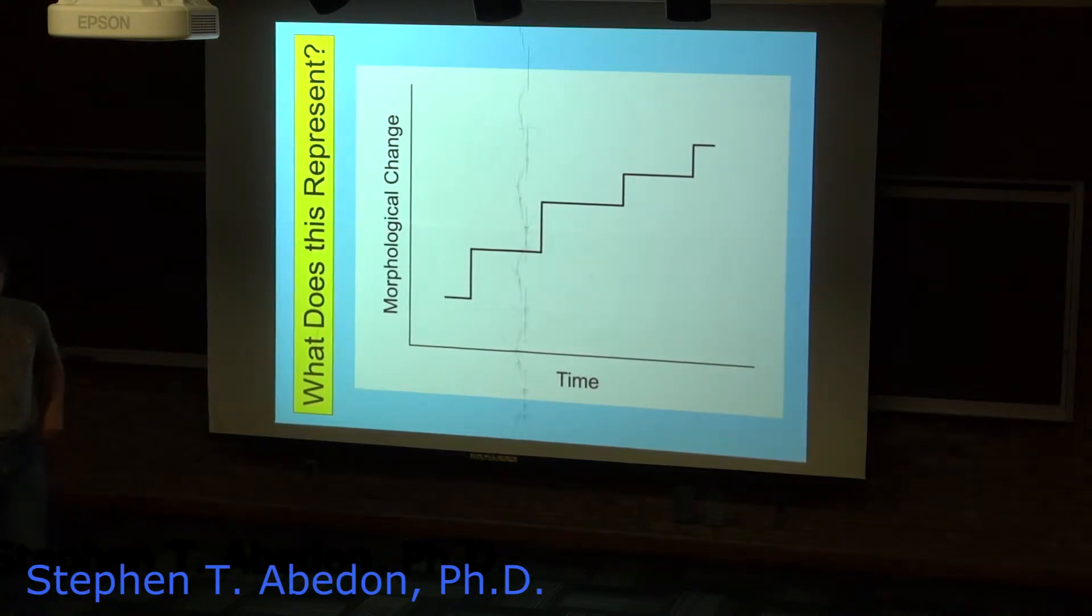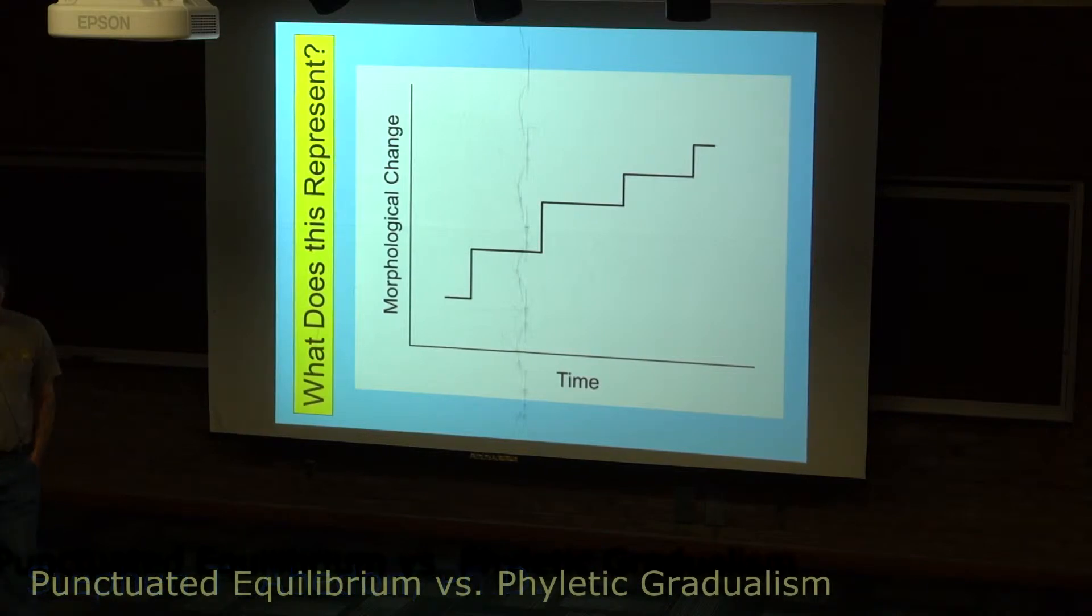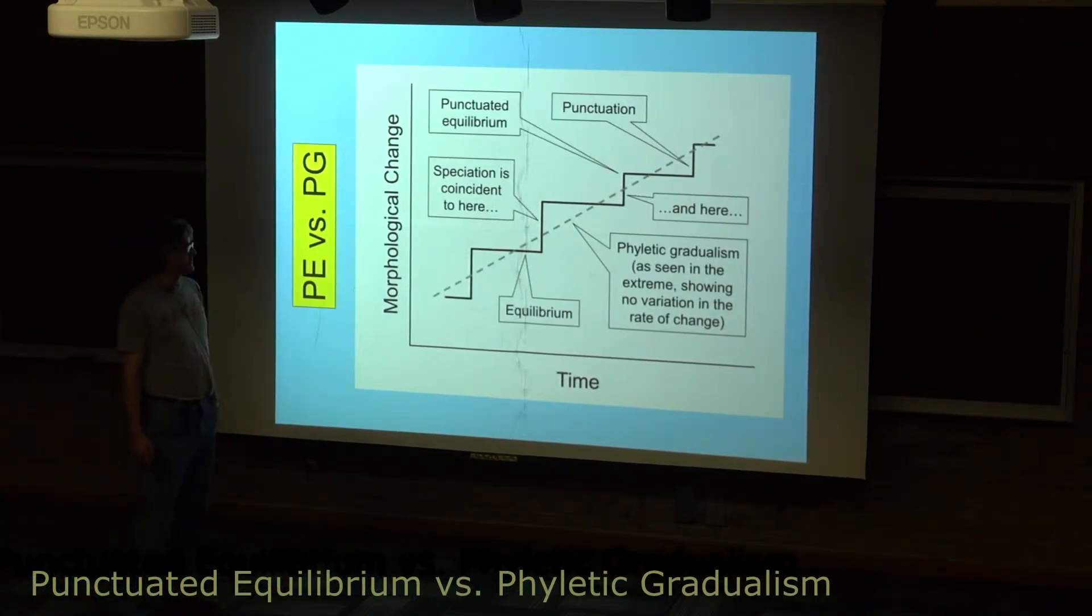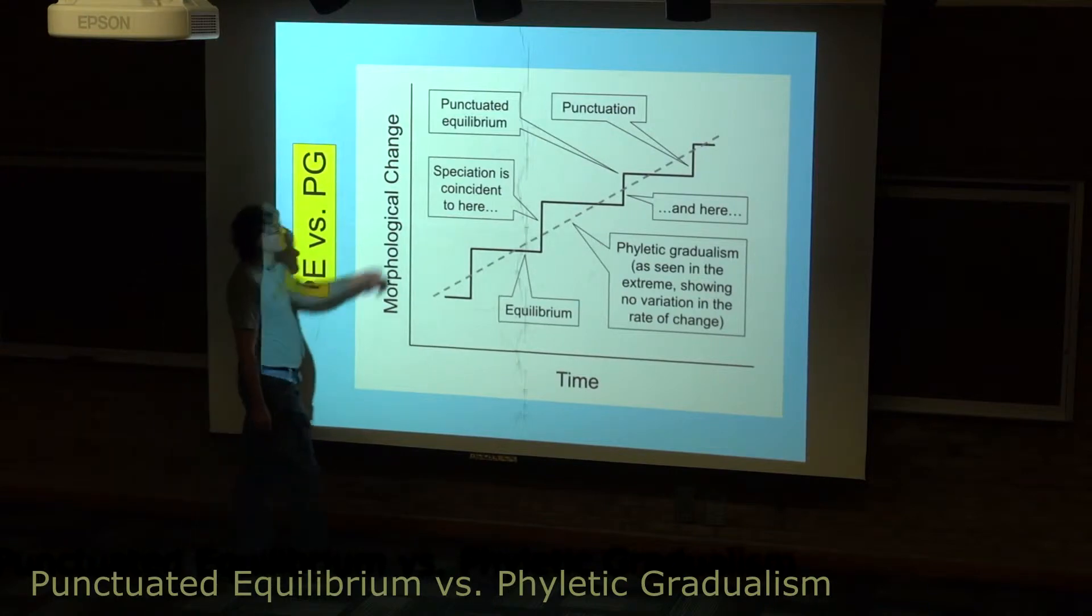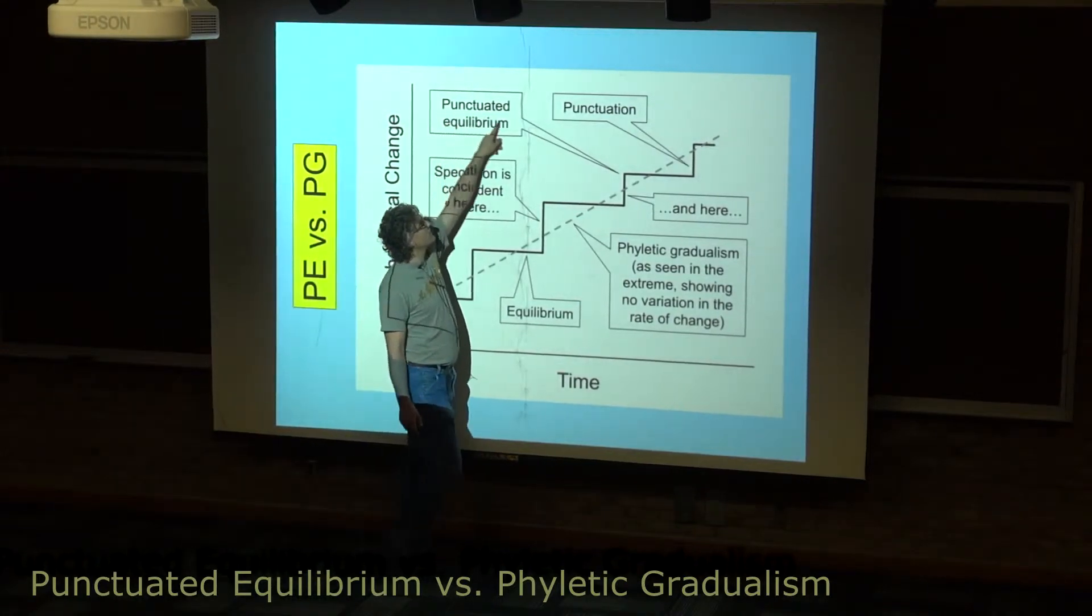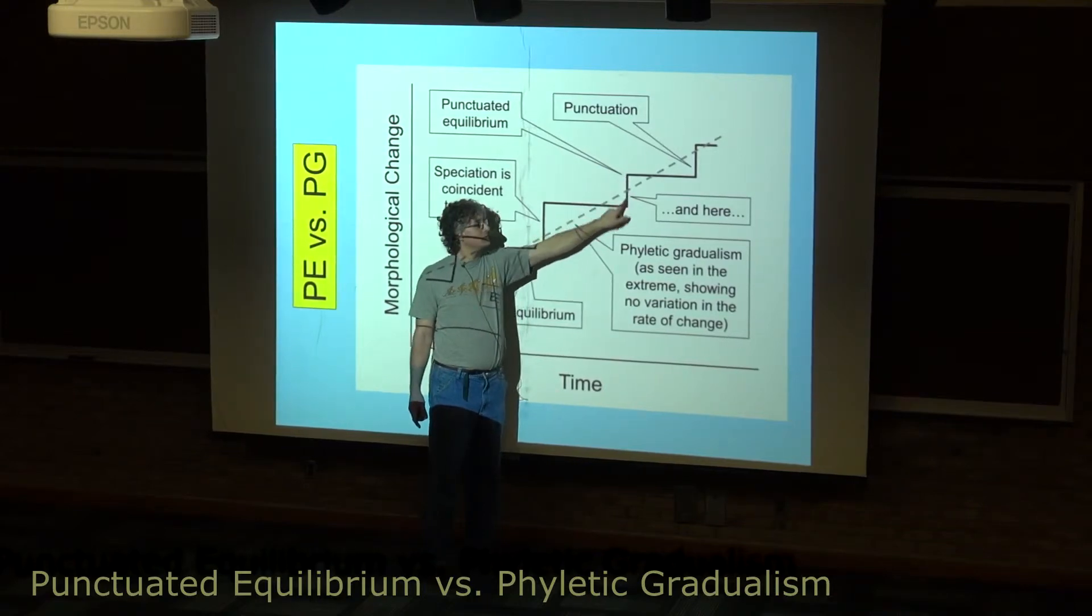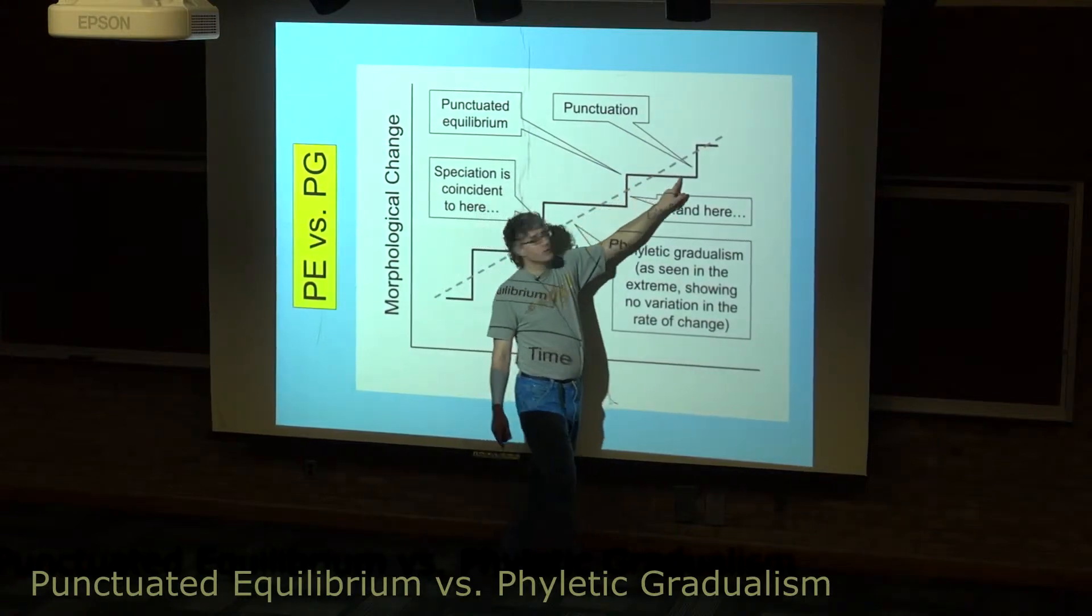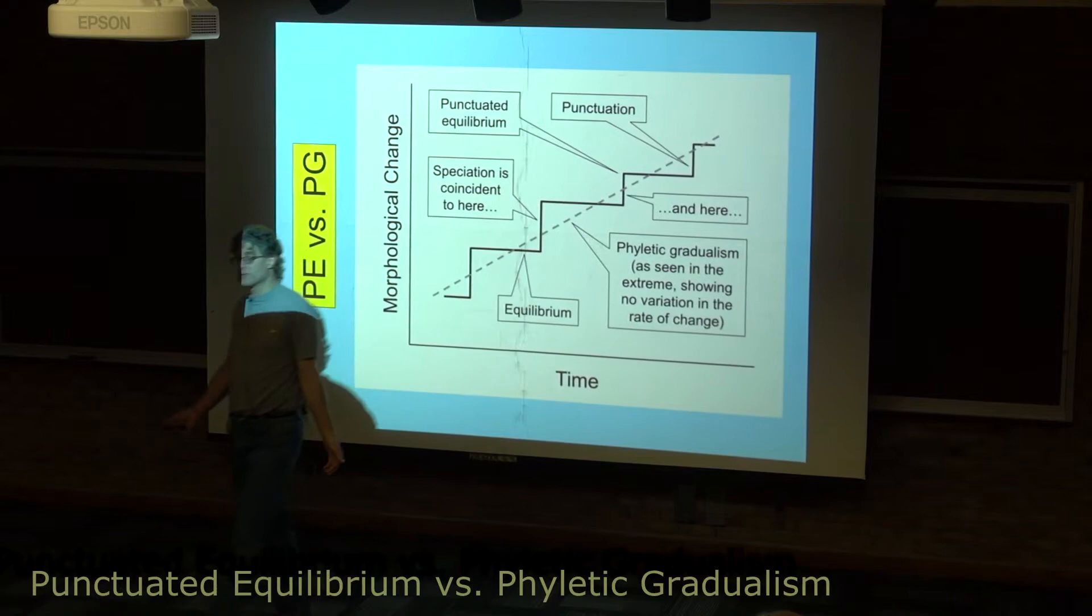So what does that graph represent? Keep in mind that's two different graphs. If I just look at one of them, the answer is that that is punctuated equilibrium. That's what this sign here is pointing towards, showing the black solid line. We have equilibrium, punctuation, equilibrium, punctuation. That's basically what punctuated equilibrium means.